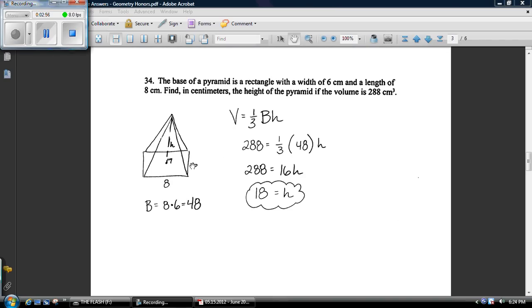Base of a pyramid is a rectangle. I basically just drew it in. The width is 6 and the length is 8. We've got to find the height. This is a formula for reference sheet. Remember that this big B is the area of the base. 6 times 8 is 48. All you've got to do is just plug in. Solve away. H is 18.